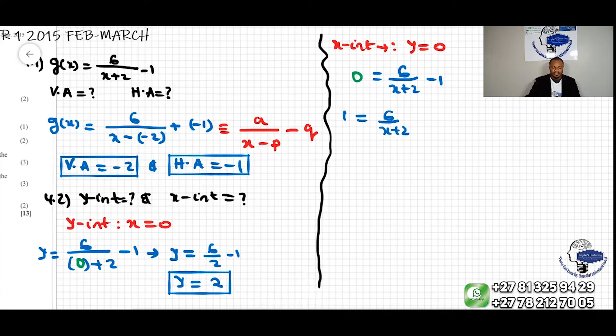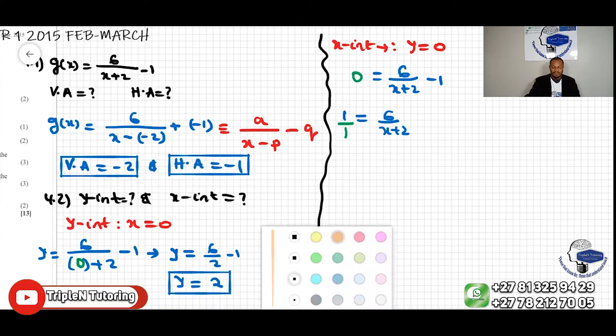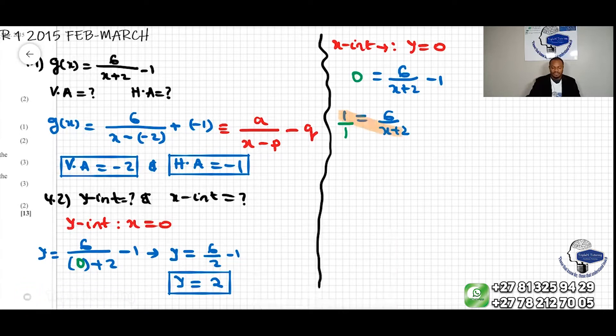Then the 1 is like 1 over 1. And then we can solve this by cross multiplication, meaning we do 1 times x plus 2, and we can also do the 1 times 6 there.